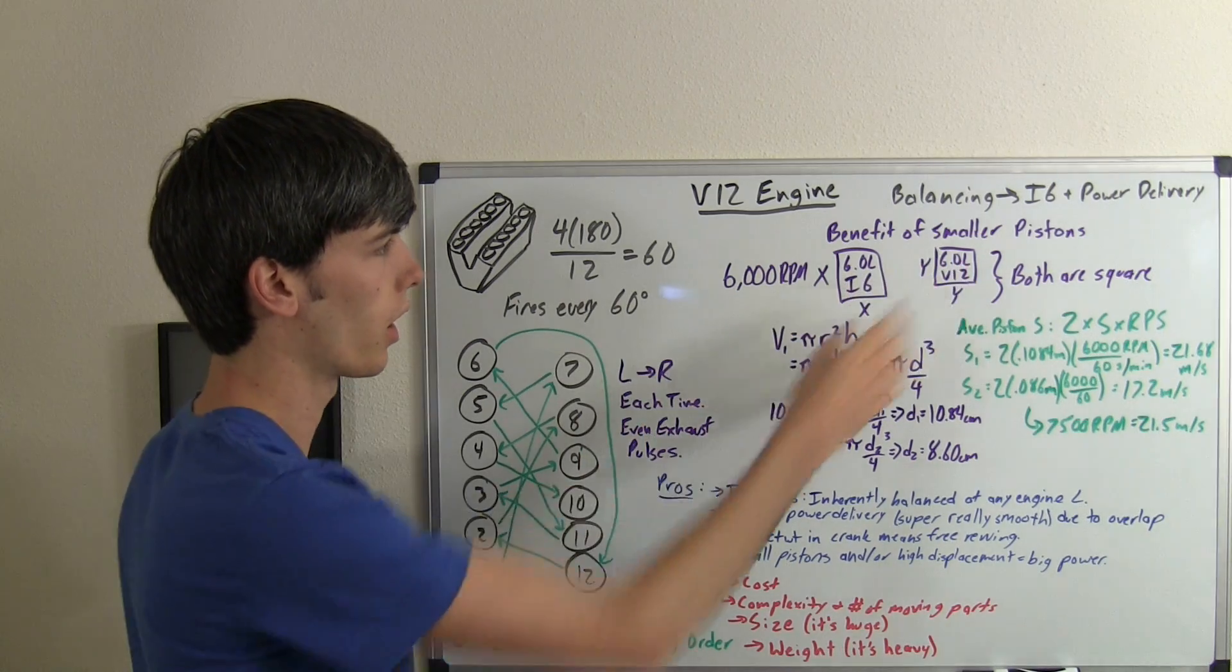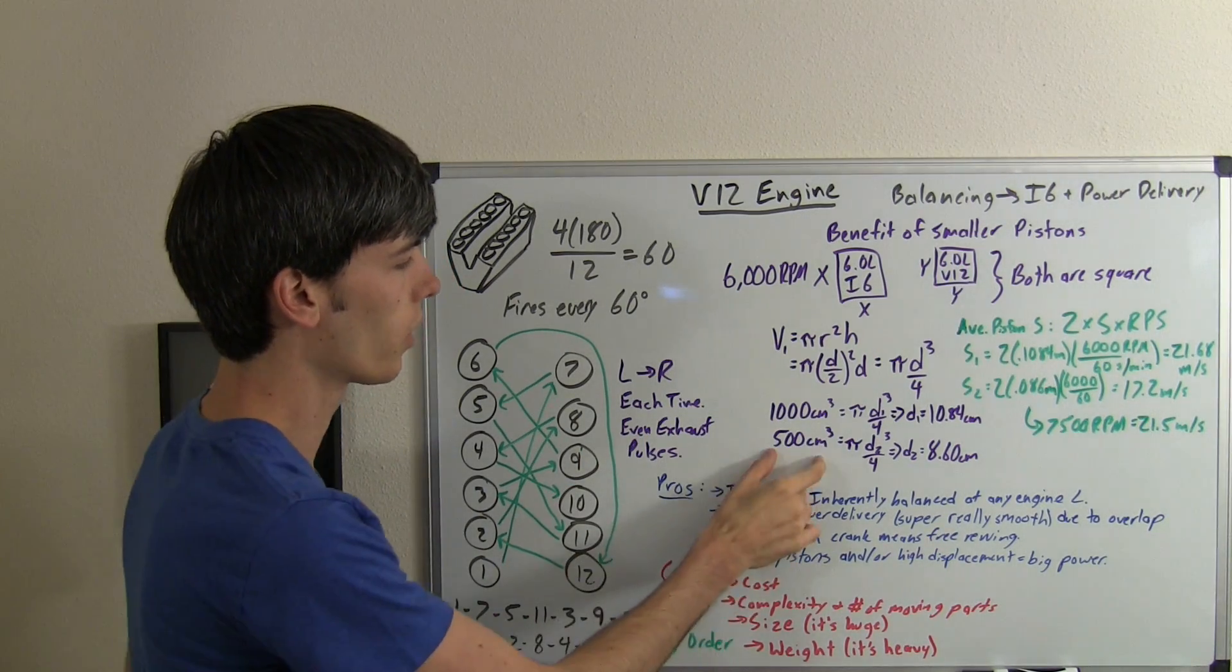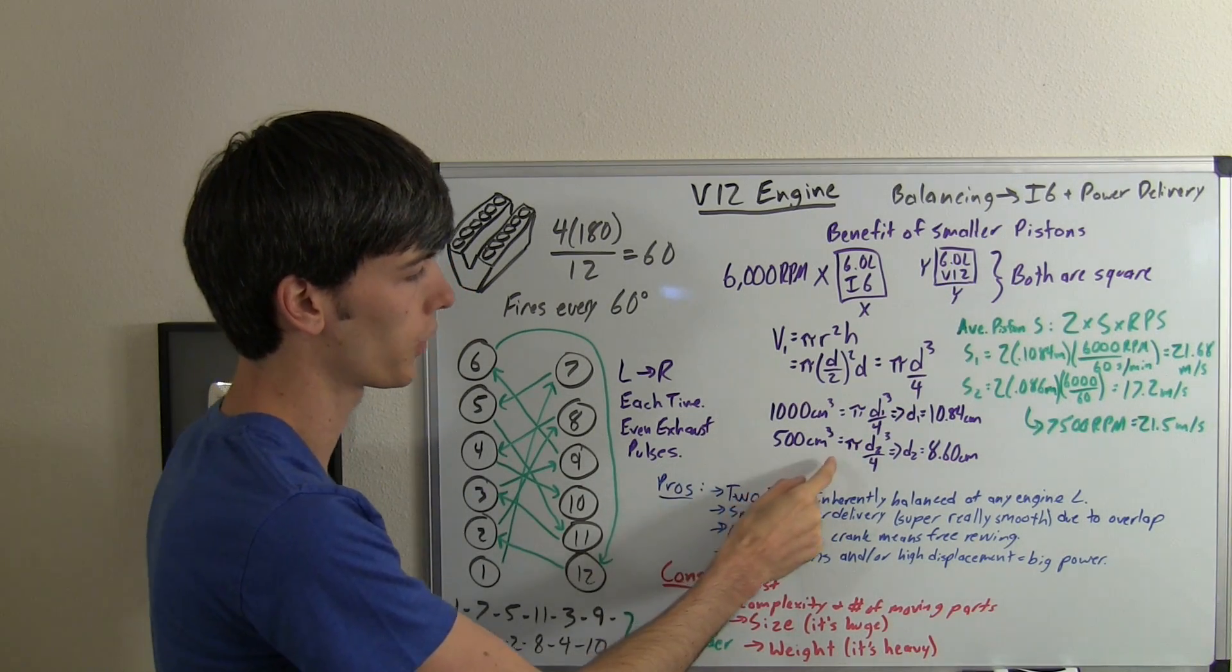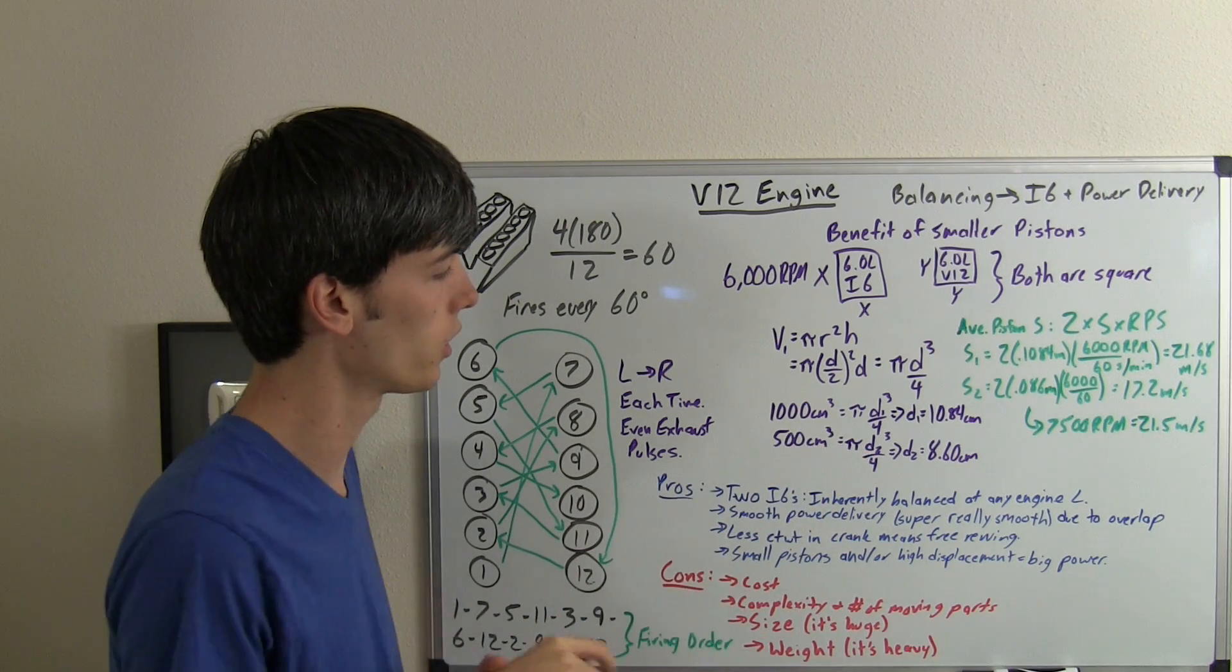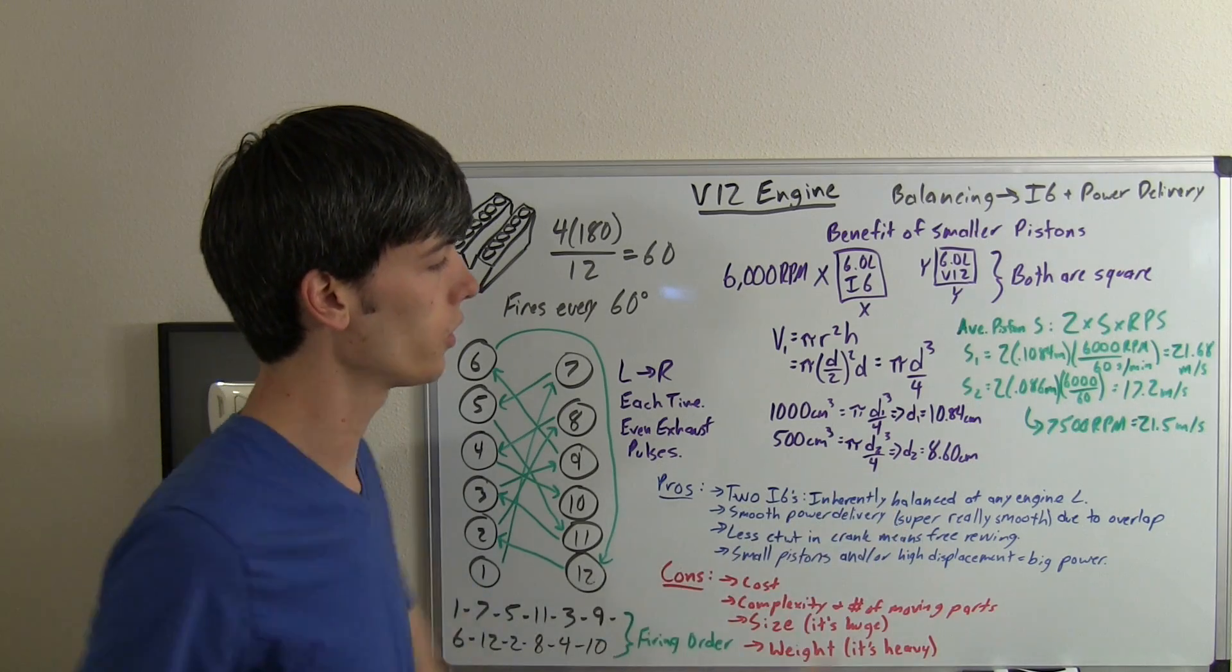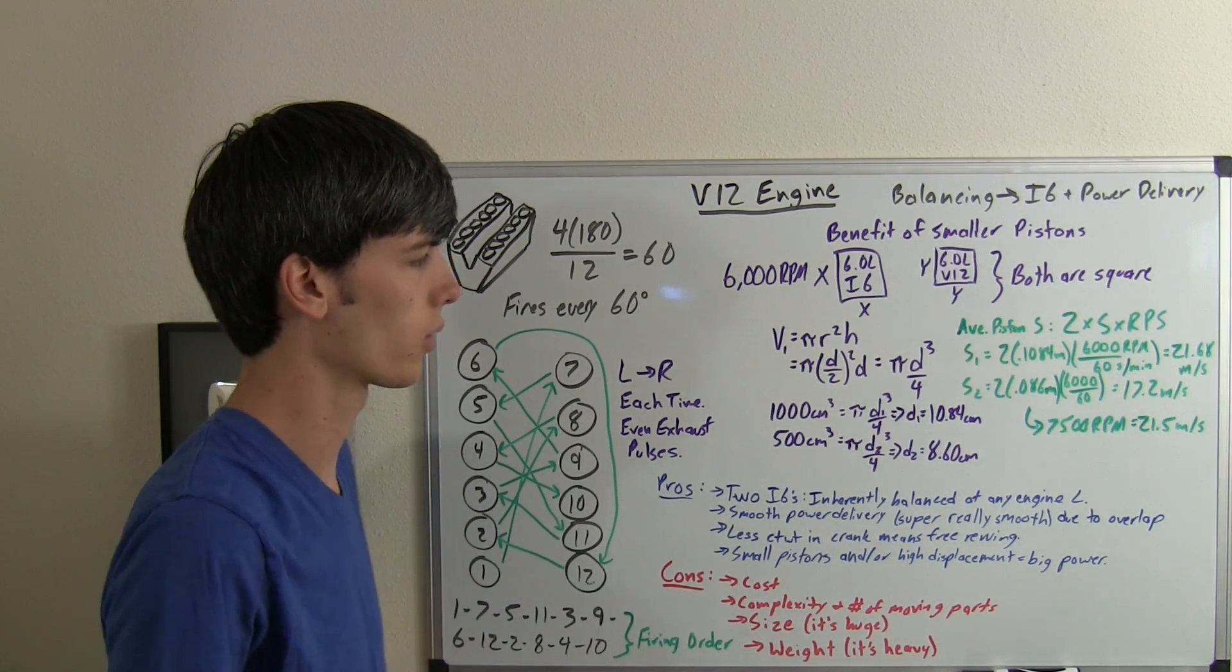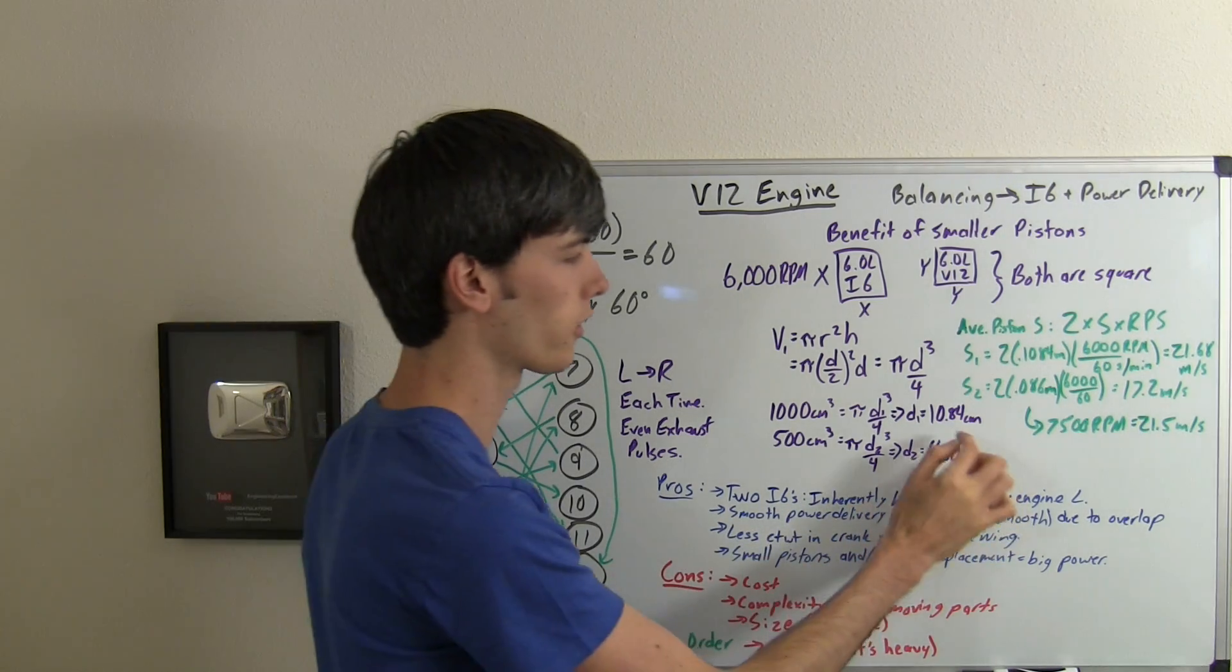Now what's the stroke of the smaller cylinder, which is in the V12? So 12 cylinders, 6 liters, divide that out, you get 500 centimeters cubed per cylinder. Set that equal to pi d cubed over 4, and d2, which is the diameter of the second one, or the height of the second one, bore or stroke, is 8.6 centimeters. So as you can see, it's smaller than here.